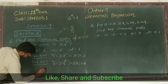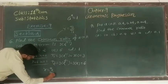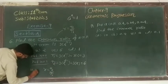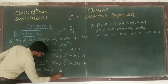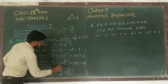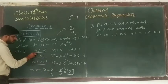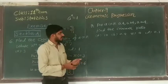Now r equal to t2 upon t1. We know that. So 2nd term is 6, first term is 3. So 3 twos are 6. So our answer is 2.